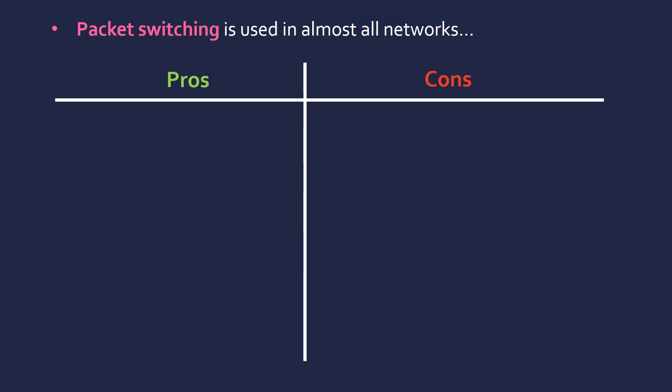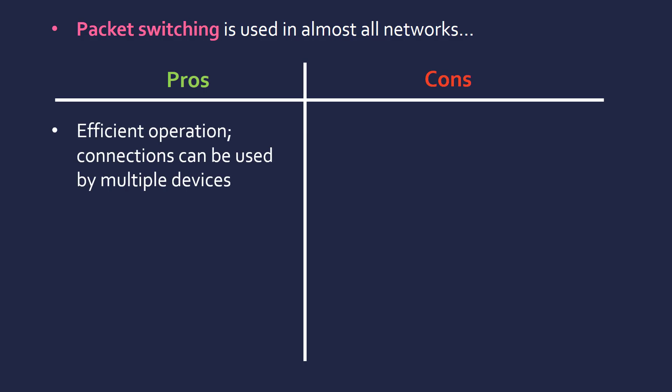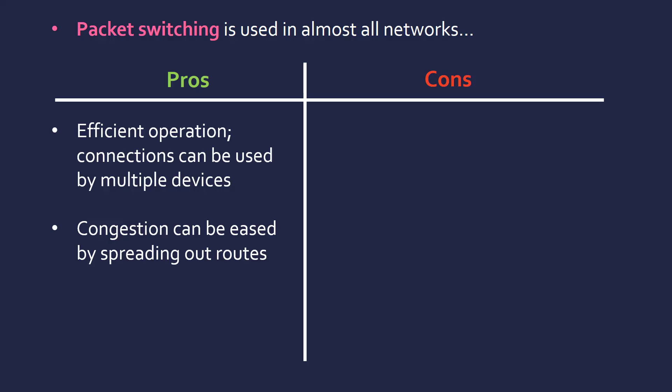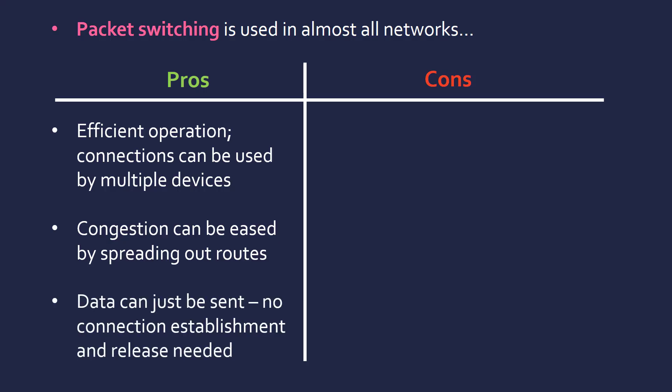Packet switching is what's used almost all the time, so let's talk about pros and cons. First, packet switching is a much more efficient operation. With circuit switching, you make a route private so no one else can use it, wasting capacity. With packet switching, multiple devices can use the same connection, making it far more efficient. Congestion can also be eased because packets can be spread out — a router can decide to send some data another way to avoid a slow or congested route. Additionally, we can just send data whenever we want to, without having to wait to establish a connection or release it afterwards.